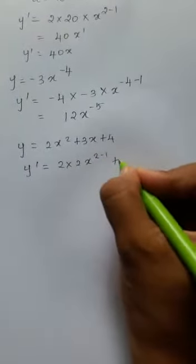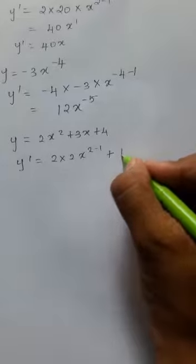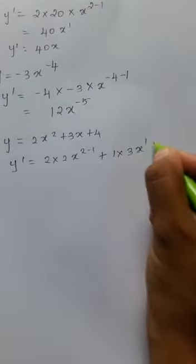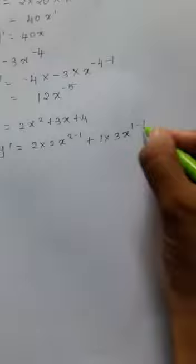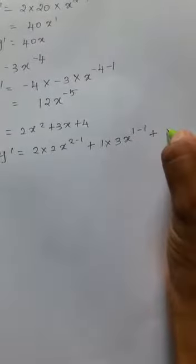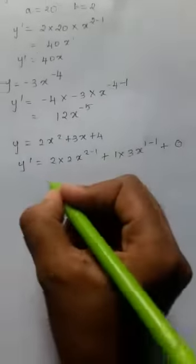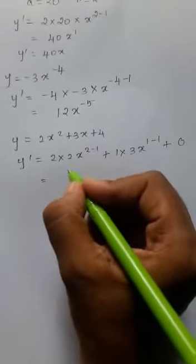3x to the power 1, and my 4 is constant, that is plus 0. So calculating, I get the total is 4x to the power 1...